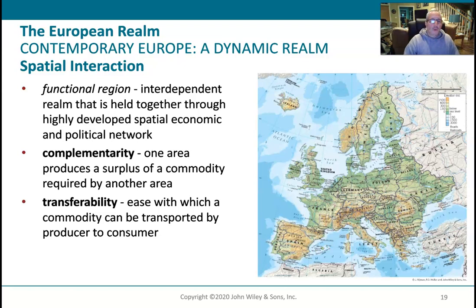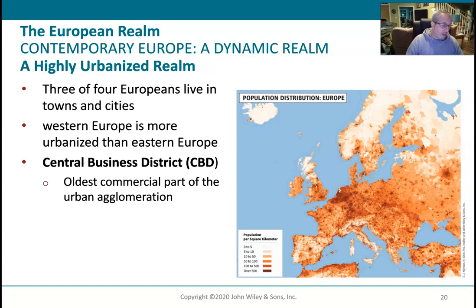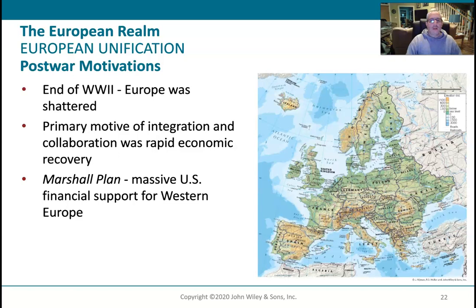We have some definitions here — functional region, complementarity, and transferability — which you can look at in your textbook. The central business district is basically the center of a city where most business is done. For rural areas that's your town squares, or the Plaza de Armas in Latin America, or city centers in larger cities like Nashville's 2nd Avenue downtown area.